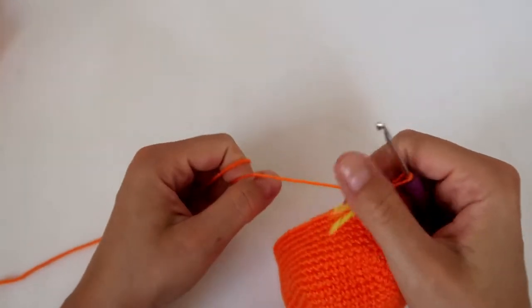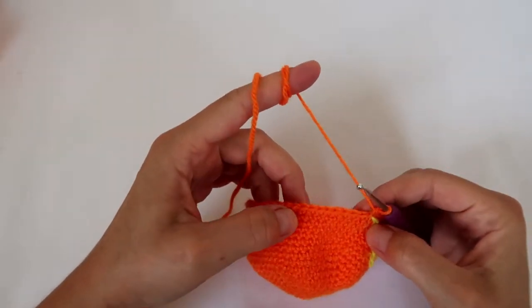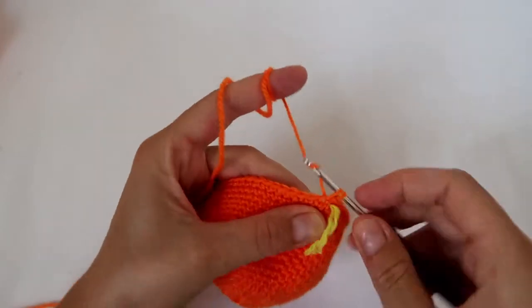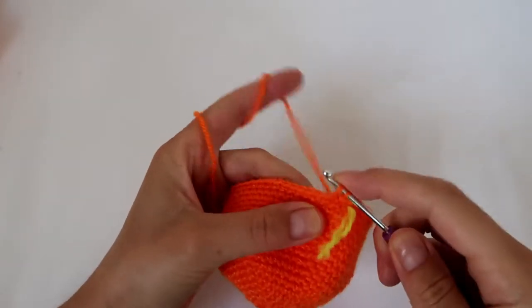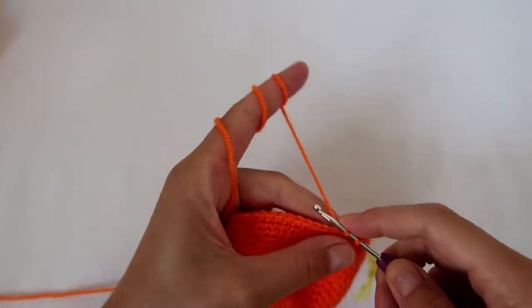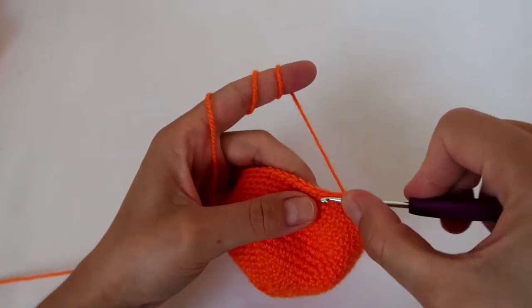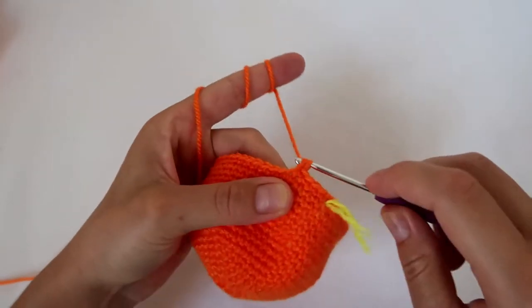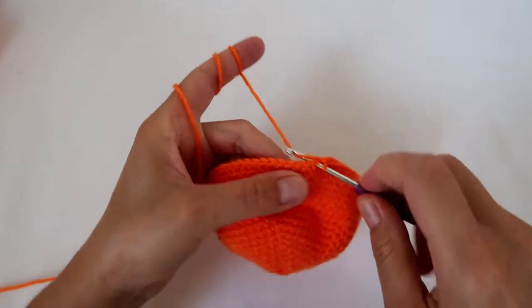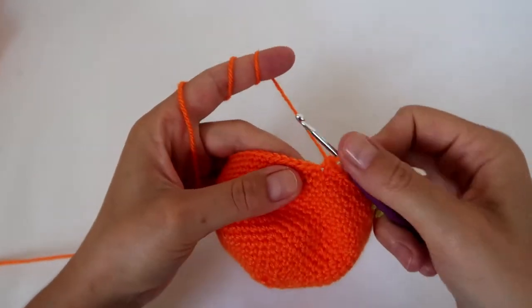And at this stage I'm going to start decreasing. So I'm going to go for 8 stitches with 1 double crochet in each, and then 1 decrease. 1, 2, 3, 4, 5, 6, 7, and 8, and then 1 decrease.